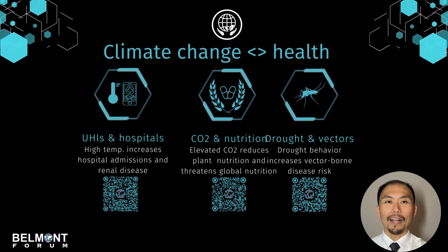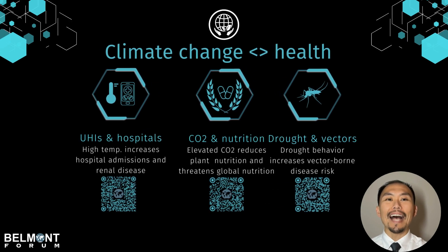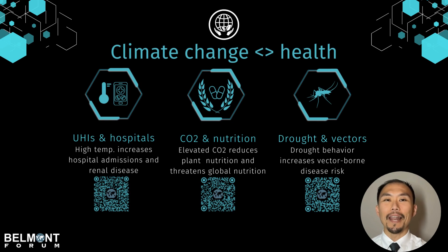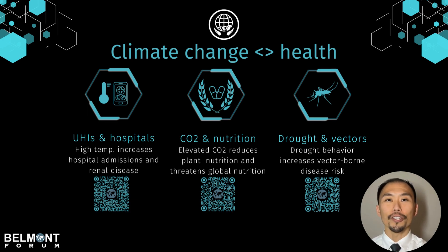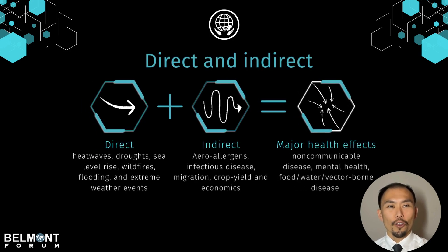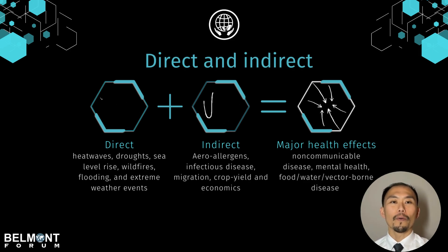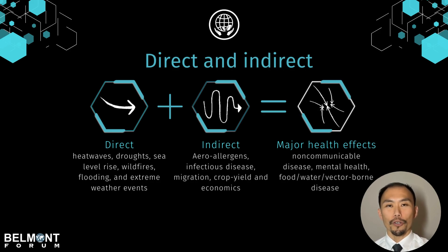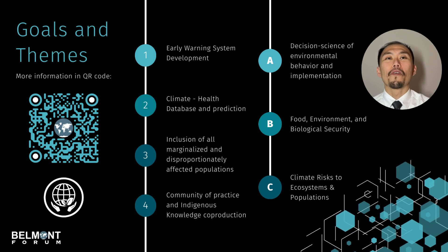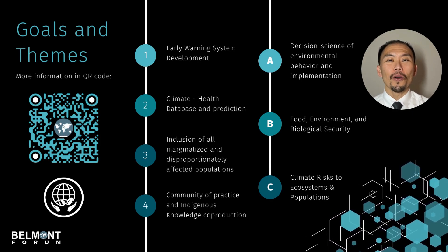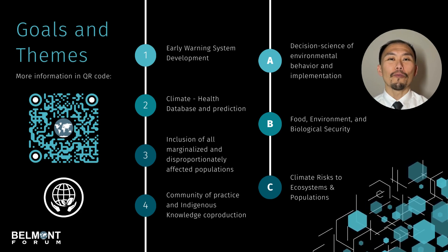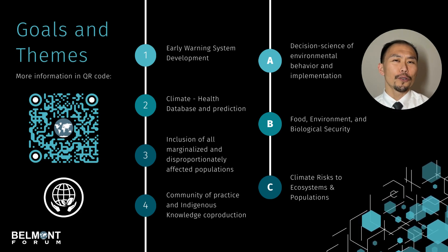The Belmont Forum is organizing a call on climate, environment, and health because the research community is asking for it, and there are a lot of research gaps that need to be addressed, such as extreme heat, dehydration, and renal disease, higher carbon dioxide and reduced crop nutrition, or current drought adaptation behaviors propagating vector-borne diseases. The impacts on human or ecological health can be direct, like wildfires, or indirect through zoonotic spillovers, which lead to major health effects, especially with people living with non-communicable diseases or disproportionately affected communities. This CRA, or collaborative research action, will address several goals — ranging from the creation of early warning systems to developing a community of practice.